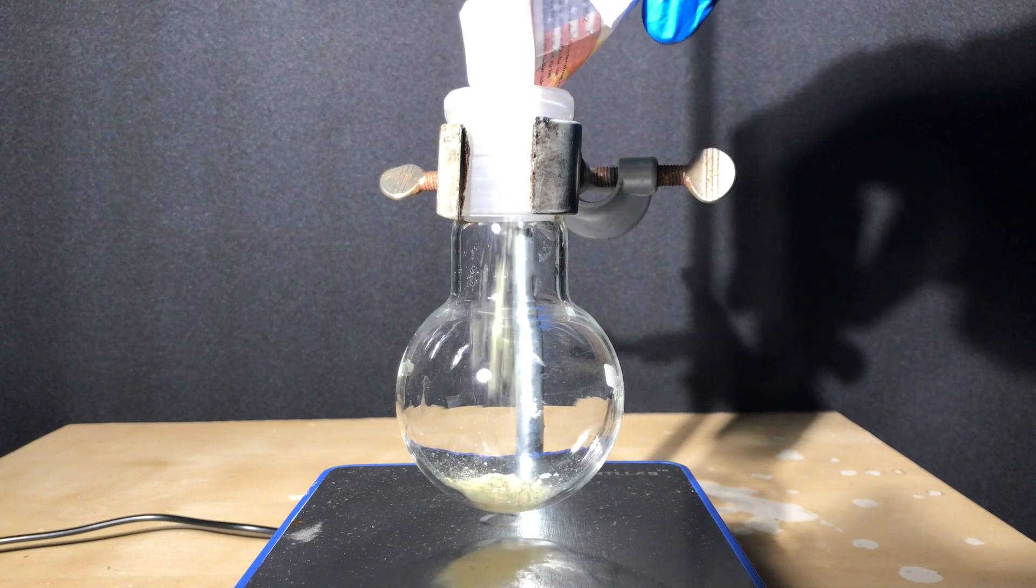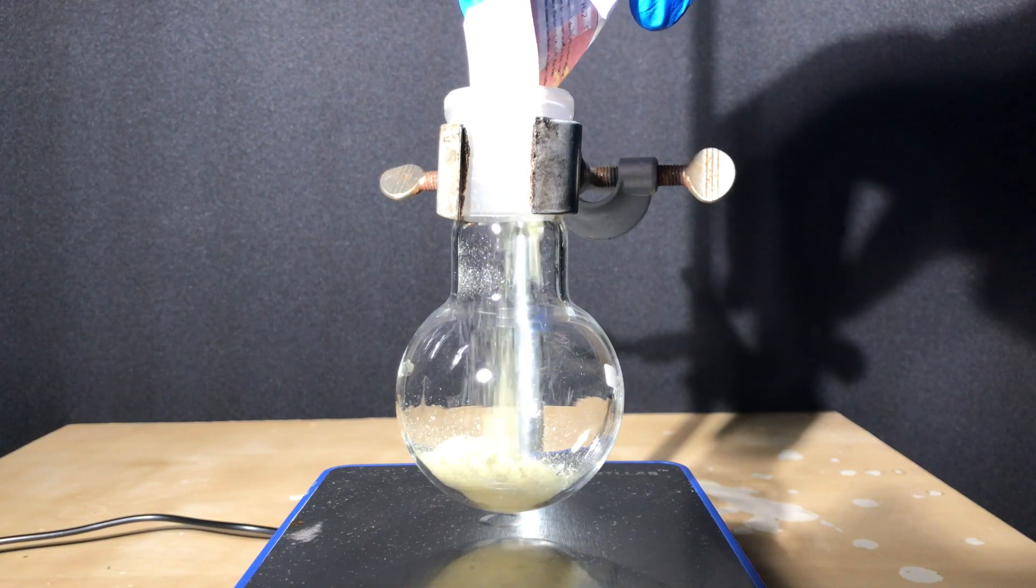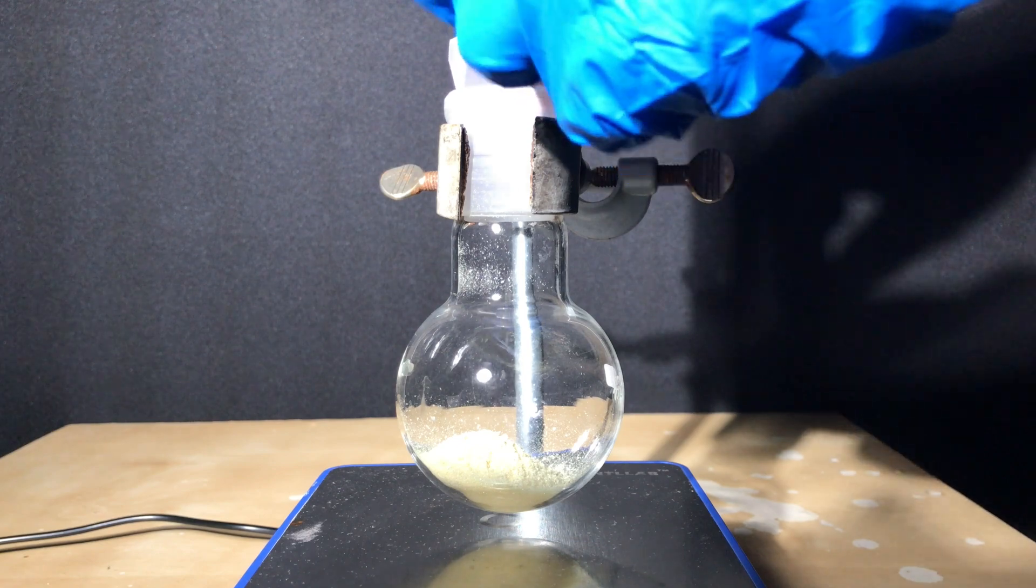The Anthracene and the stir fish were added to this small round bottom flask followed by about 50ml of DCM as a solvent.